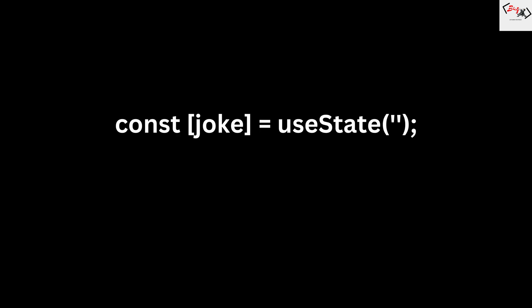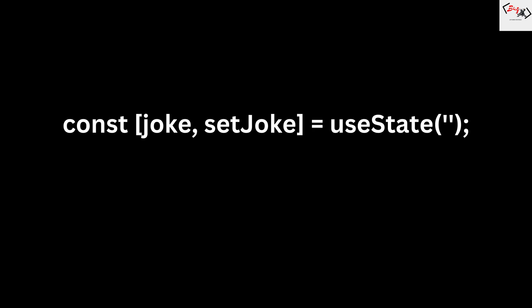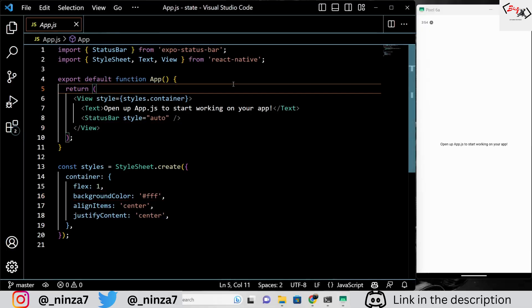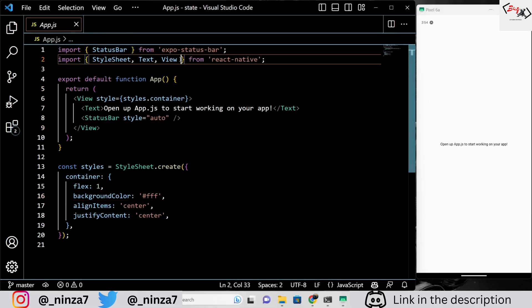We can use the useState hook to create a state variable called joke and initialize it with an empty string. Then we can use the setter function called setJoke to fetch a joke from an API and update the joke state with the response. Here is what the code looks like.